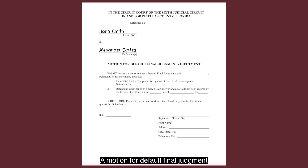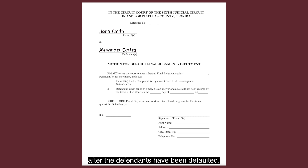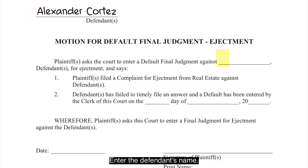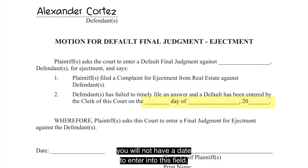A motion for default final judgment requests the court enter a final judgment on your case after the defendants have been defaulted. Enter the defendant's name. If you are filing your motion for default final judgment together with a motion for default, you will not have a date to enter into this field.